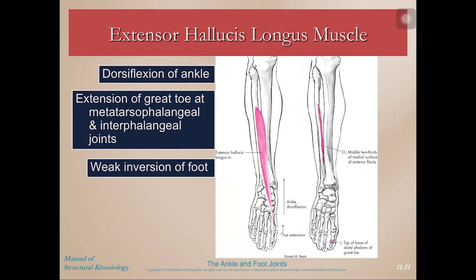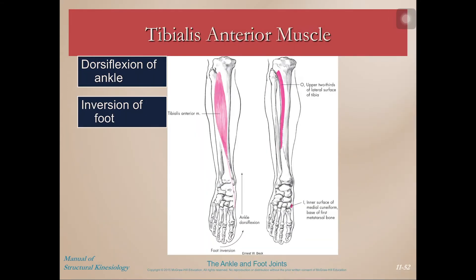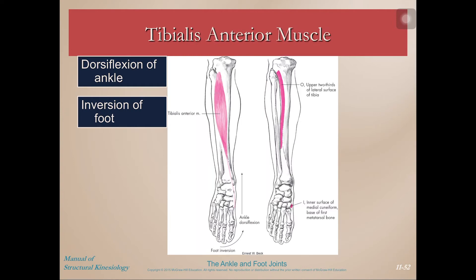Next is the extensor hallucis longus — 'hallucis' is similar to 'pollicis' for the thumb, but in this case it refers to the big toe. It extends the great toe and does dorsiflexion, but also weak inversion because it pulls the medial part of the foot up and outward, rotating the underside inward. The tibialis anterior is the muscle you feel just lateral to your shin bone, and because it's on the anterior aspect it does dorsiflexion and also inversion of the foot due to its insertion on the medial aspect of the medial cuneiform.